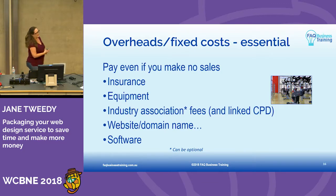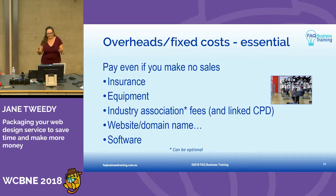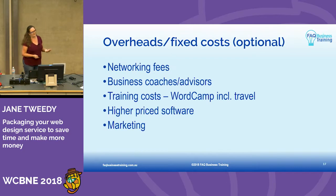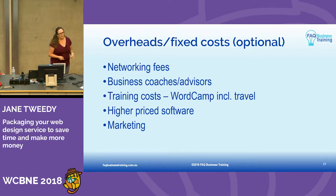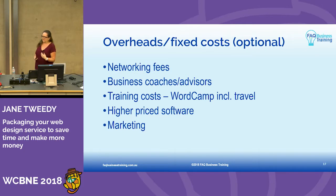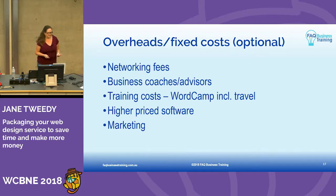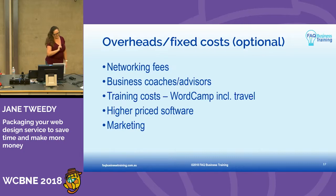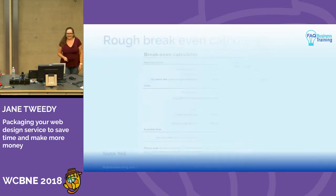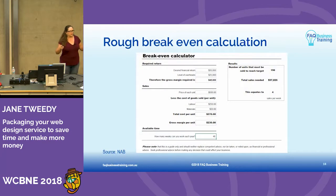Even if you don't make sales, these overheads have to be paid — things like insurance, buying your laptop, buying your software and themes. Before you've made one sale, you've had to buy all that stuff. You also have other costs that are optional — things like paying for advisors, coming to WordCamp. These are optional but good things. In marketing, I'm not saying it's optional — I'm just saying you can go for low-cost options rather than expensive ones. There is an NAB break-even calculator that you can work through.